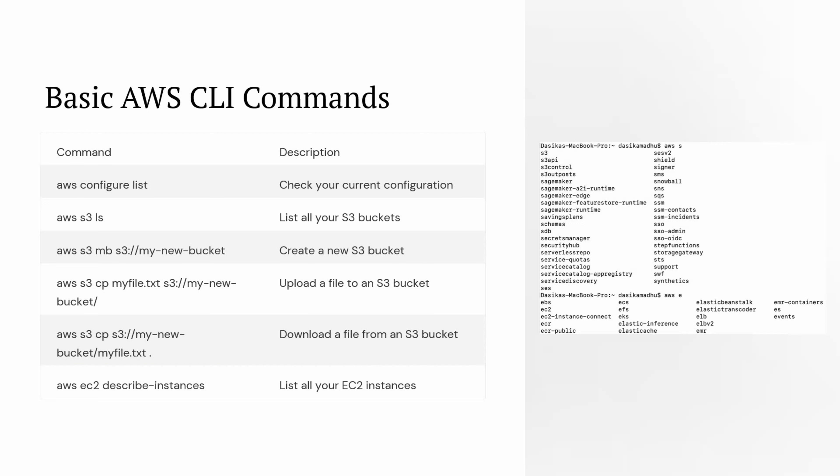To list all your EC2 instances, use the command 'aws ec2 describe-instances'.